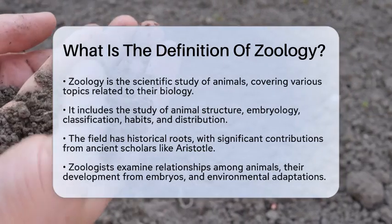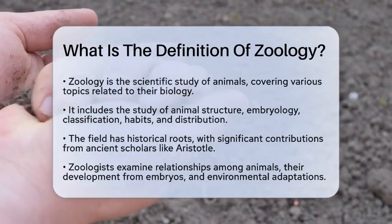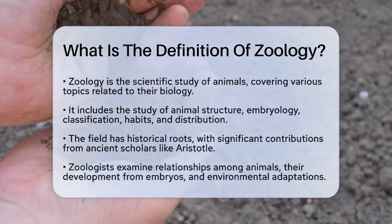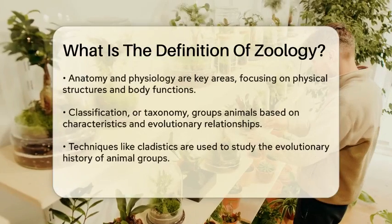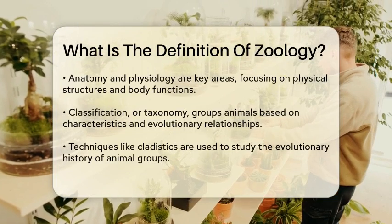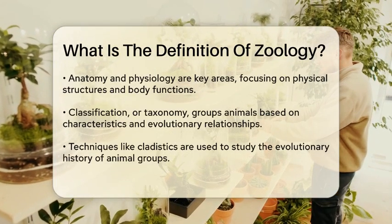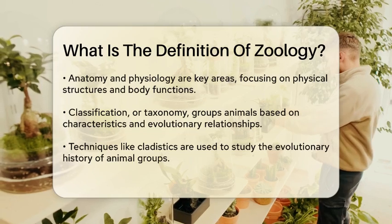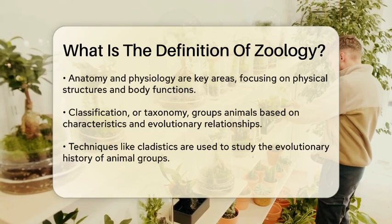Imagine trying to understand how different animals are related, how they develop from embryos, and how they adapt to their environments. Zoology does just that. It involves studying the anatomy and physiology of animals, which means looking at their physical structures and how their bodies function. For example, zoologists might study how a bird's wings are structured to enable flight, or how a fish's gills allow it to breathe underwater.